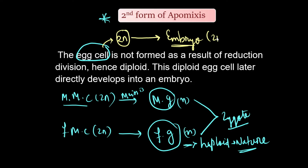The embryo formed is also diploid in nature. This situation is called apomixis. In this second form, the embryo is formed from a diploid unfertilized egg — the diploid unfertilized egg develops directly into an embryo.